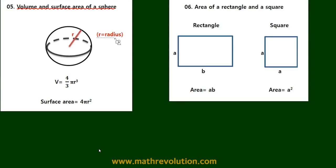So in a sphere, you will first need to find out the radius, and once you have that, the volume is 4 over 3 times pi r to the power of 3, and the surface area equals 4 times pi r squared.